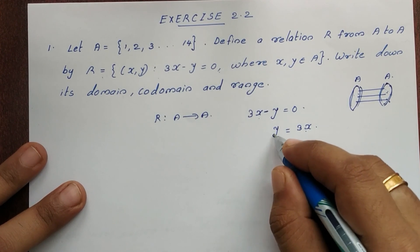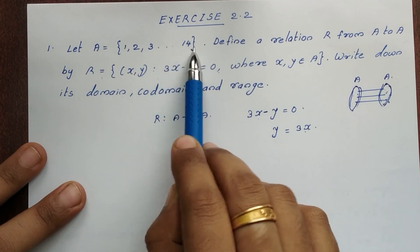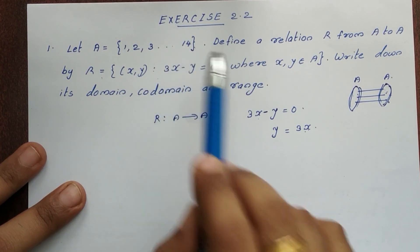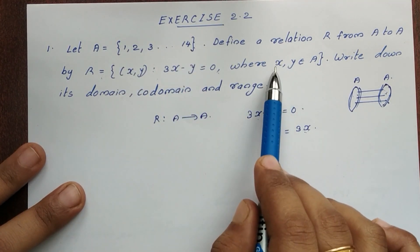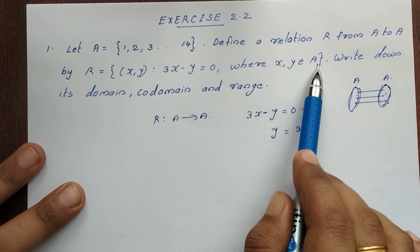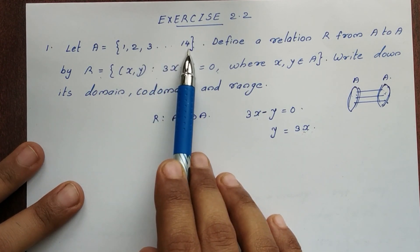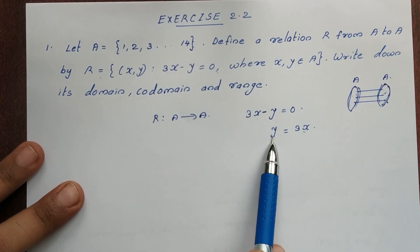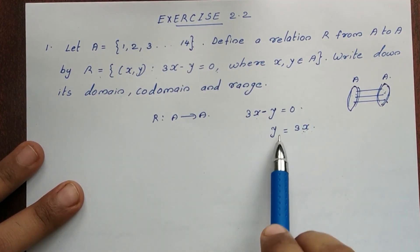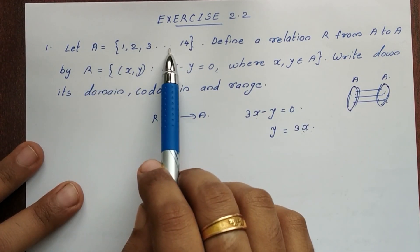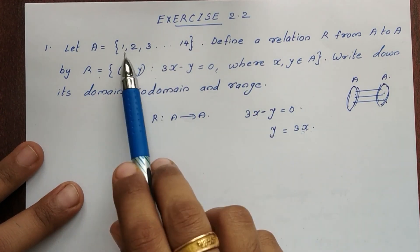We put values of x from set A, which is {1, 2, 3, ... 14}. The corresponding y values are computed using y = 3x. We only keep pairs where both x and y belong to A.